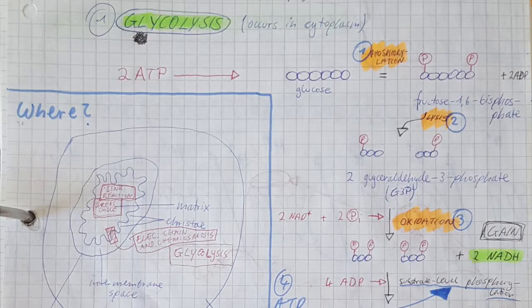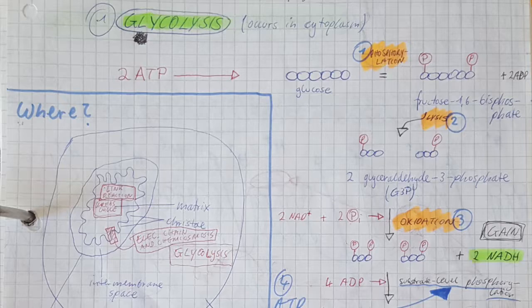Glycolysis is the breakdown of one molecule of glucose, which is a six-carbon sugar, into two three-carbon sugars, and there are four steps to this. It's always important in these processes to talk about where things are happening. For glycolysis, we are in the cytoplasm or the cytosol — so outside of any organelle, just in the cell fluid.